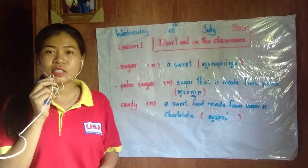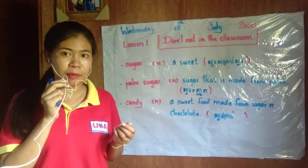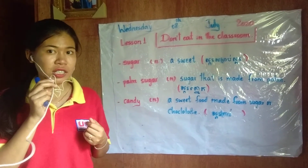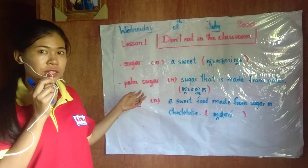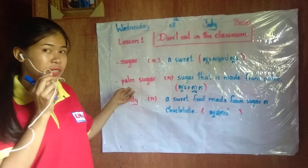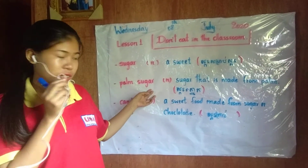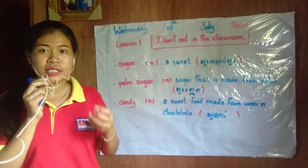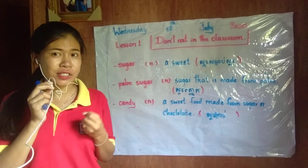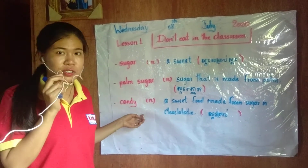The next word is a kind of sugar that is made from the palm tree. The color is yellow or orange. This word means 'palm sugar.' Listen again: palm sugar. Palm sugar is a kind of sugar that is made from the palm tree, and the flavor is very sweet — sweeter than sugar.